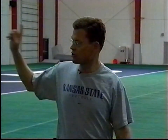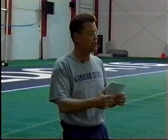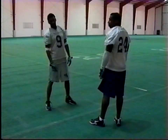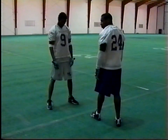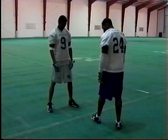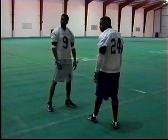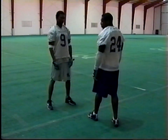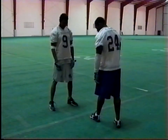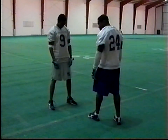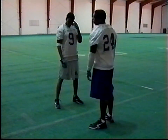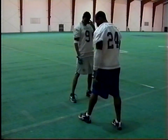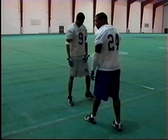We talk about alignment, stance, key, and technique. The alignment we want is going to be shaded inside or outside based on the split of the wide receiver. Mo is the wide receiver. Randy has a medium to large split, so he'll shade inside — his outside foot is in the crotch of the wide receiver. It's a slight inside shade. If Mo has a short split, then Randy would shade the other way with his inside foot in the crotch of Mo, shading him on the outside.